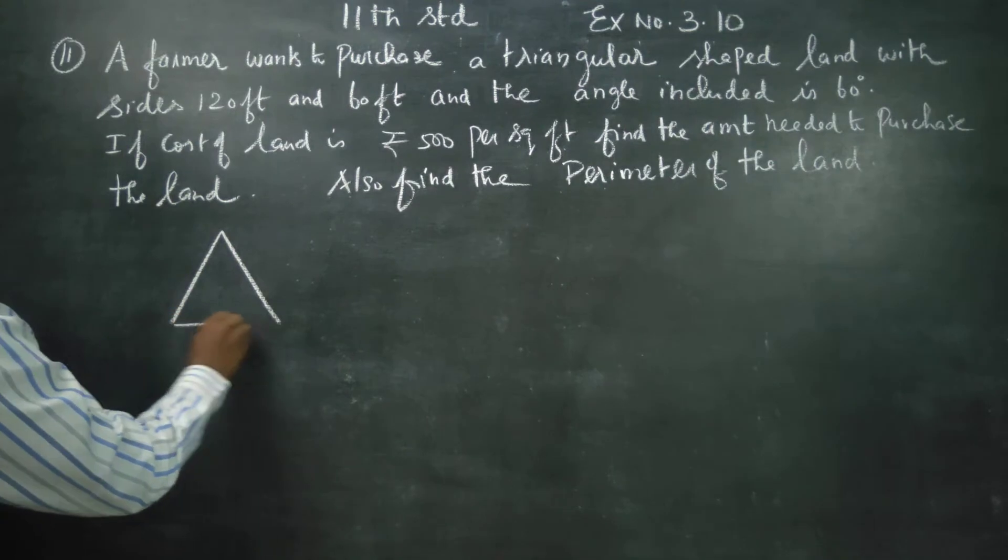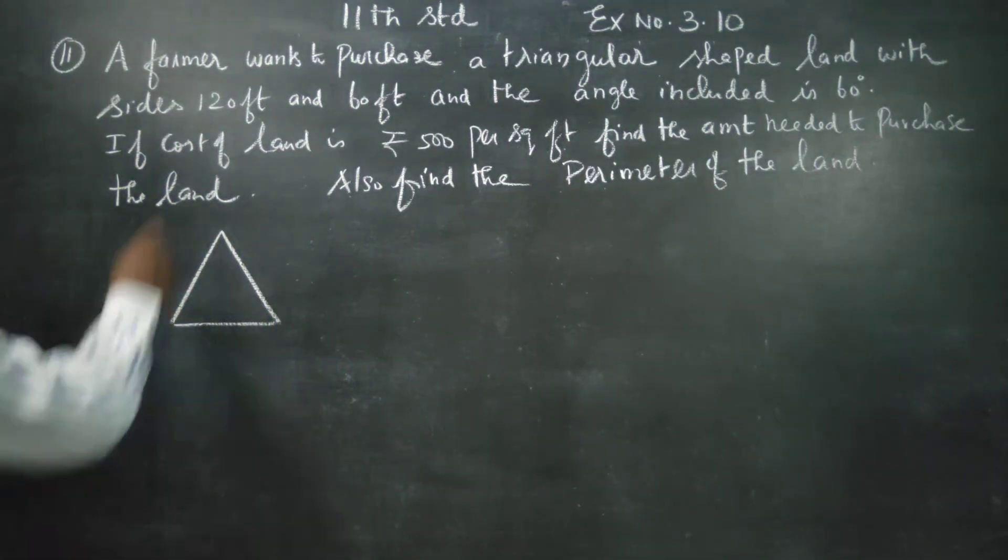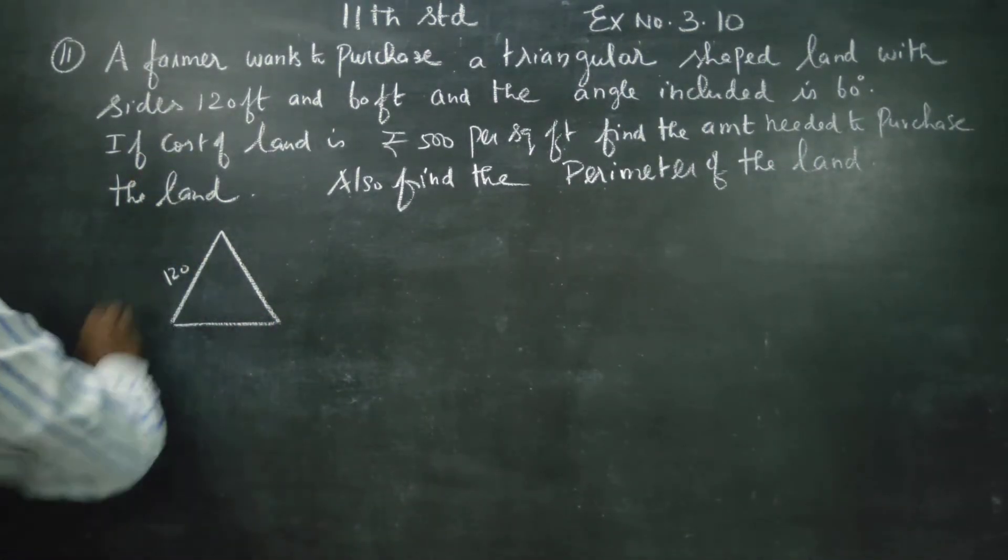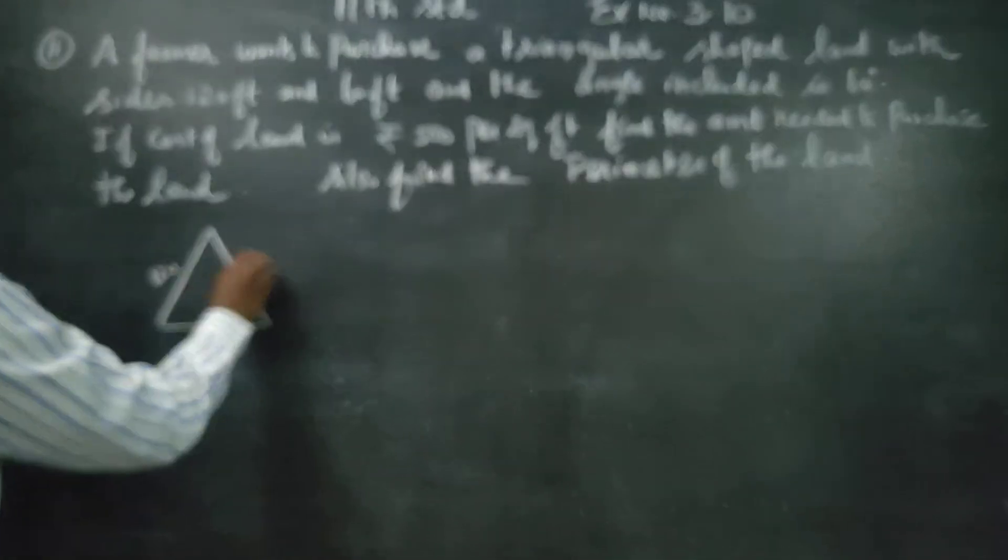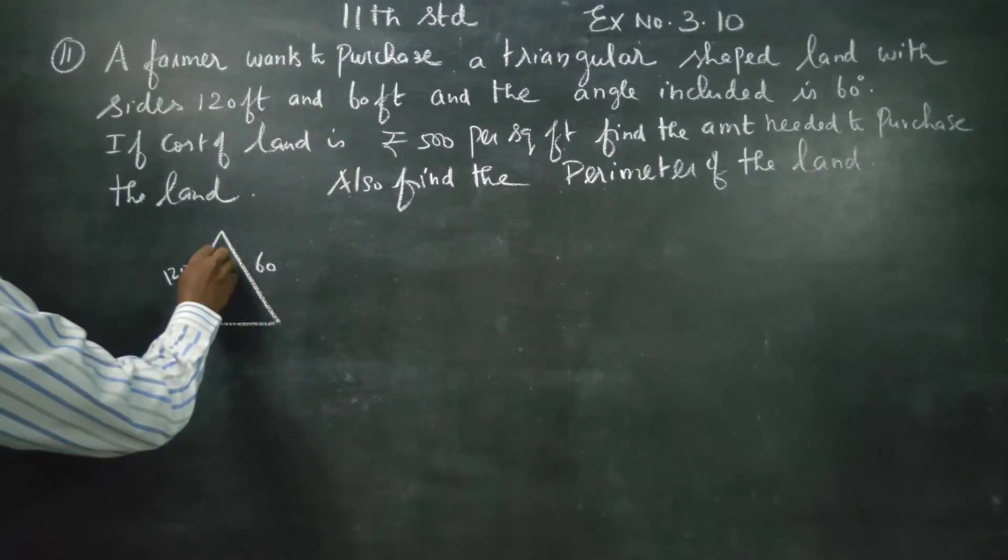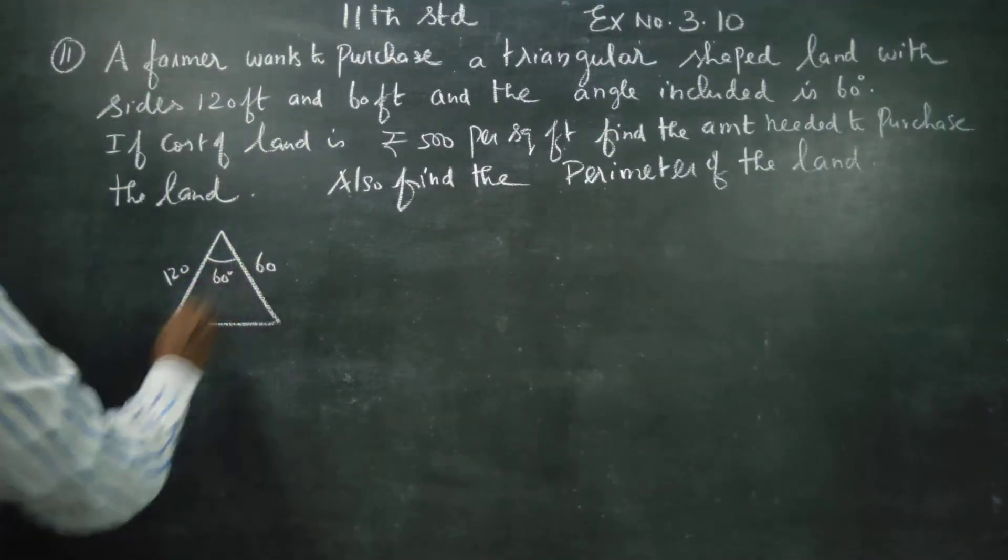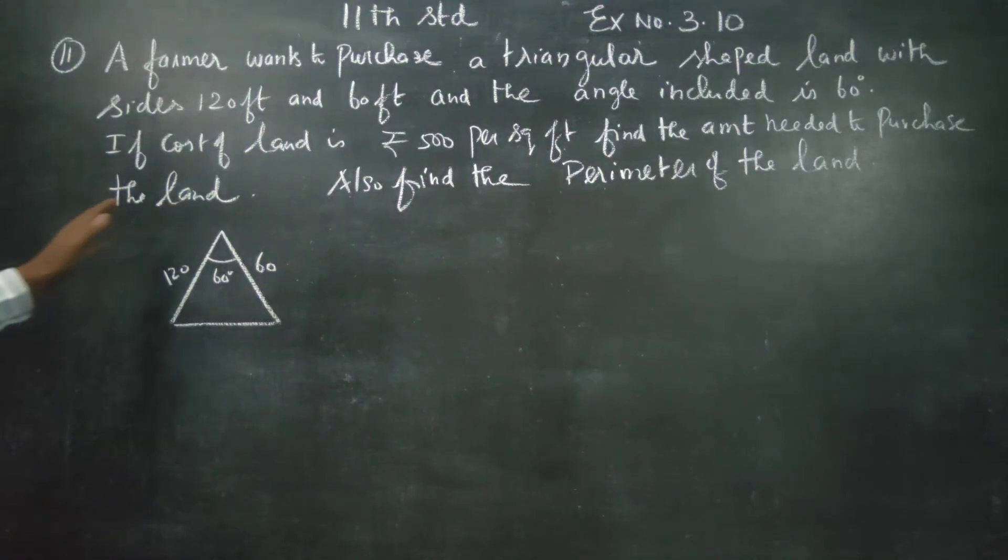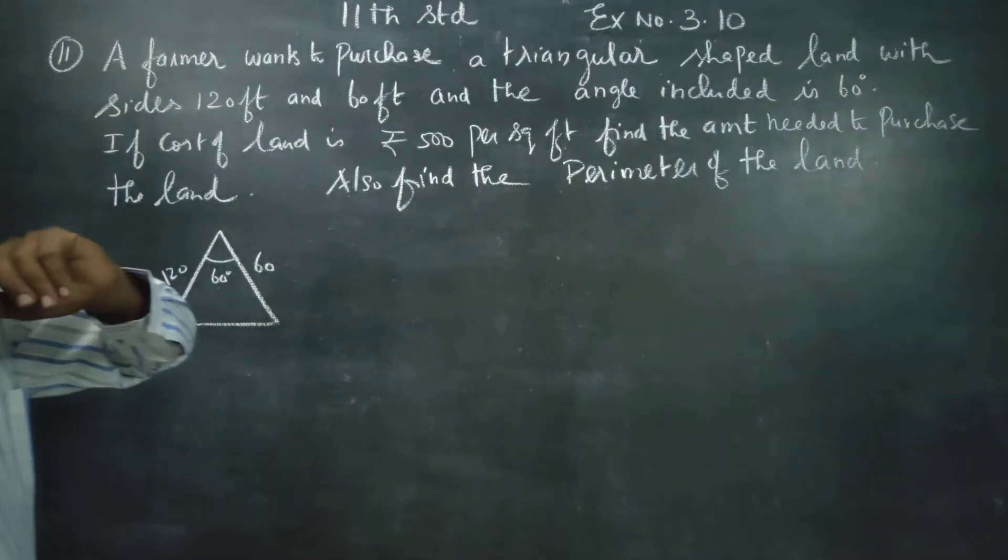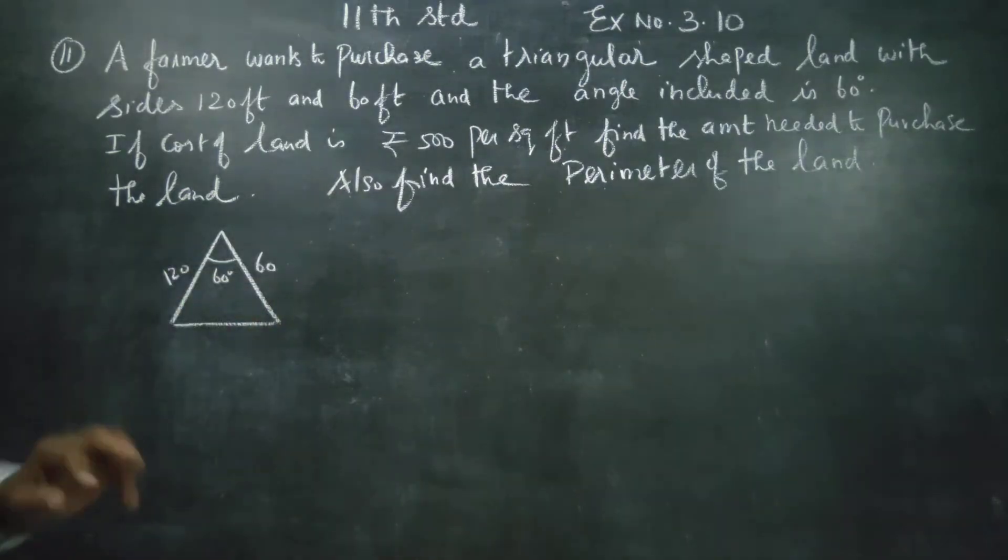Triangular shaped land with sides of 120 feet, 60 feet, and angle included is 60 degrees. If the cost of the land is $500 per square foot, find the amount needed to purchase the land. Also find the perimeter of the land.